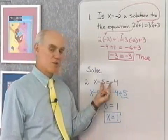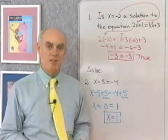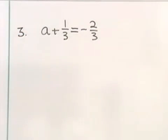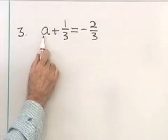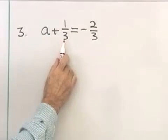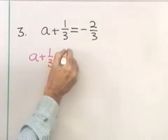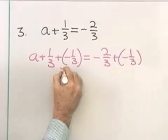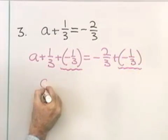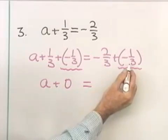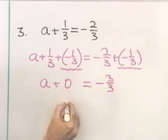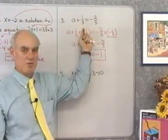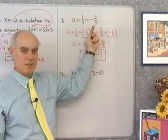This equation and all the equivalent steps all have the same solution; the last equation simply says x is equal to 1. The key to solving this equation is the addition property of equality. Here's our next example: a plus 1/3 is equal to negative 2/3. I'm going to isolate the variable a on the left side. I need to get rid of the 1/3 by adding its opposite, negative 1/3, to both sides. The left side becomes a plus 0, and the right side is negative 2/3 plus negative 1/3, which is negative 3/3. a plus 0 is a, and negative 3/3 is negative 1. So my solution is a equal negative 1. Negative 1 plus 1/3 is negative 2/3 — it checks out.